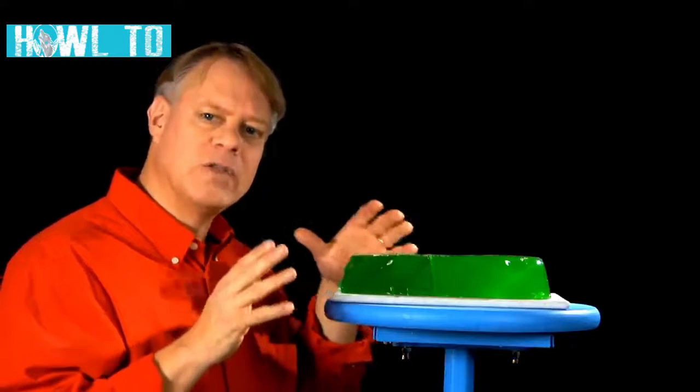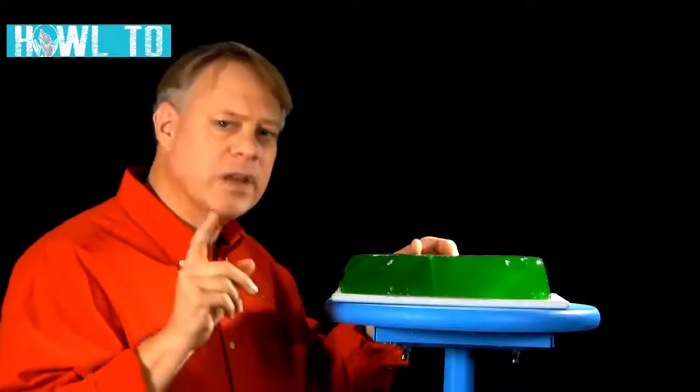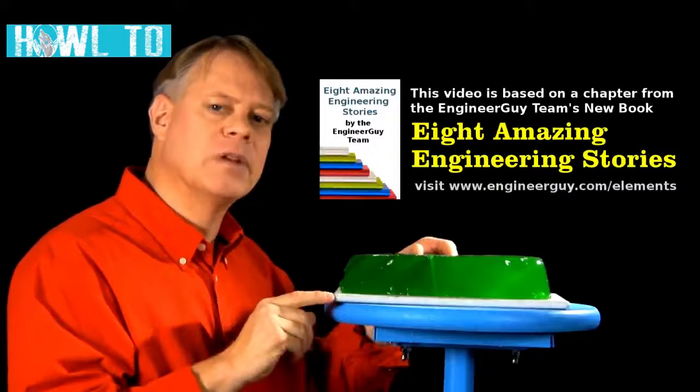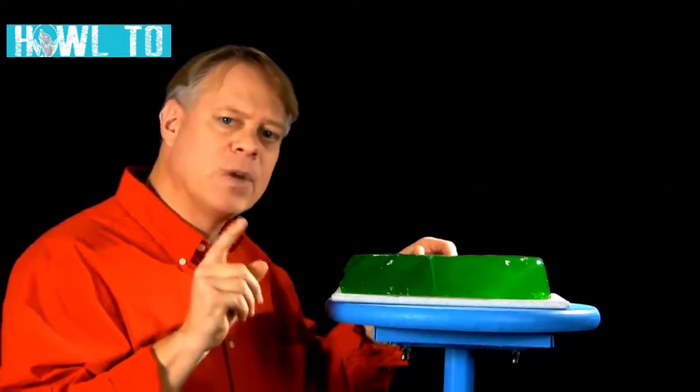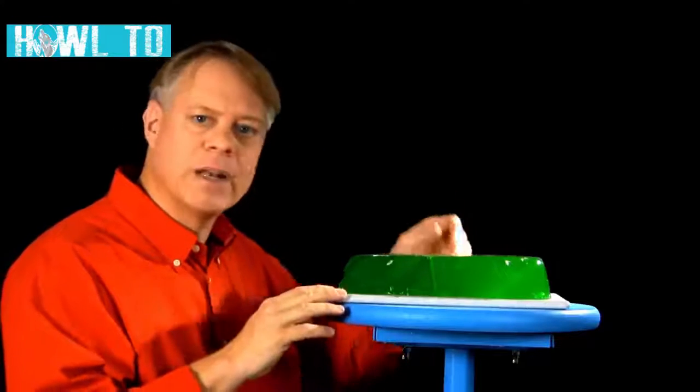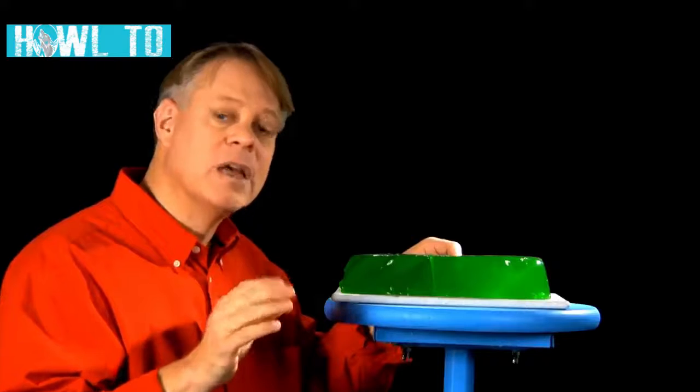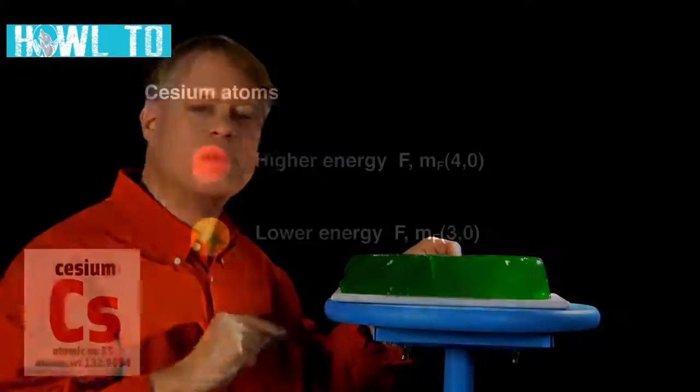Quartz loses time because it slows down and needs to be nudged to restore its oscillation. That's where the atomic part of an atomic clock comes into play. We use cesium atoms to control these nudges very accurately. Every time the quartz's oscillations slow down, just the tiniest bit, we give it a tap, an electric jolt at just the right time, so essentially its oscillations never decay. Let me show you how we use cesium to do this.